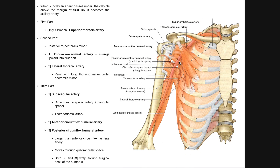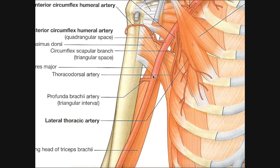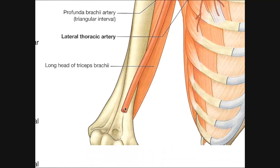At the lower border of teres major, the axillary artery changes names and becomes the brachial artery. Very quickly after that, it gives off the profunda brachii artery, which travels down the posterior aspect of the humerus, while the brachial artery maintains its anterior position. Once the brachial artery gets to the elbow, it divides into the radial and ulnar arteries.